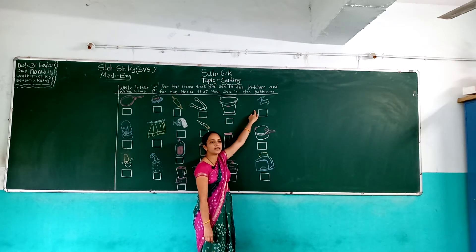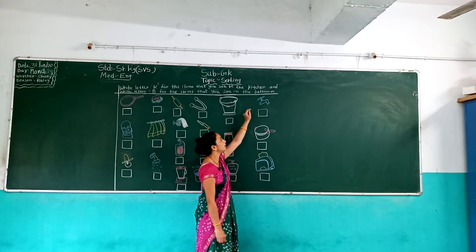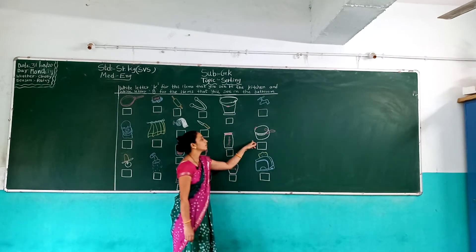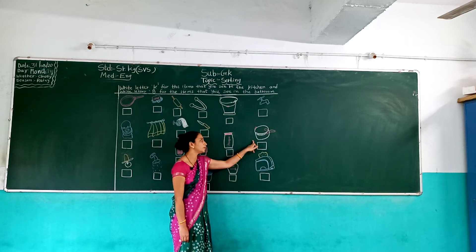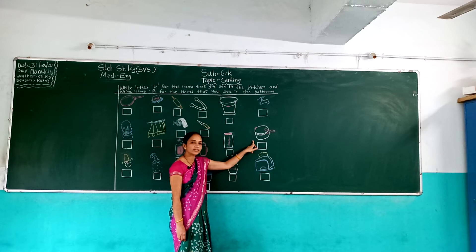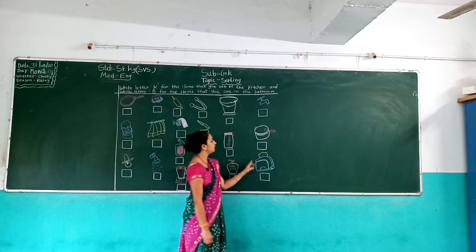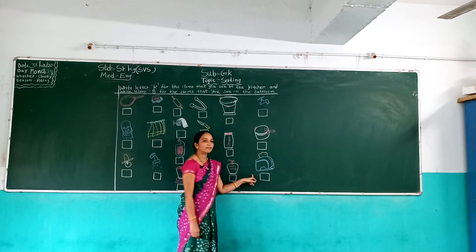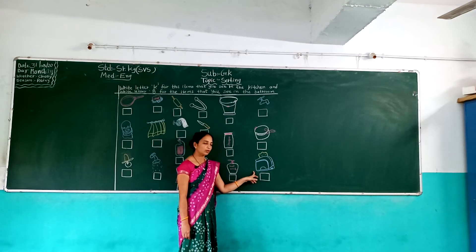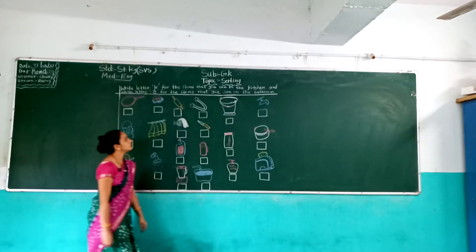Water tap — water tap. And next, toaster. Toaster — toaster kitchen में होता है. Okay, look here children.